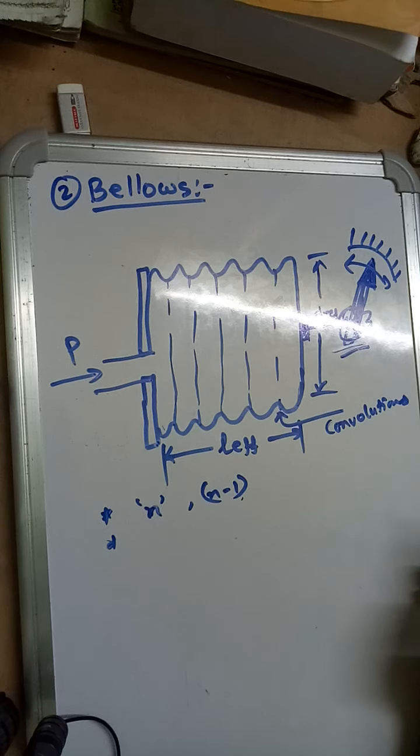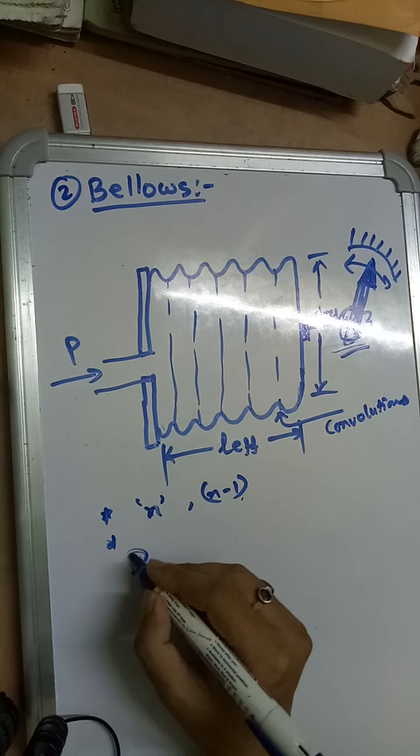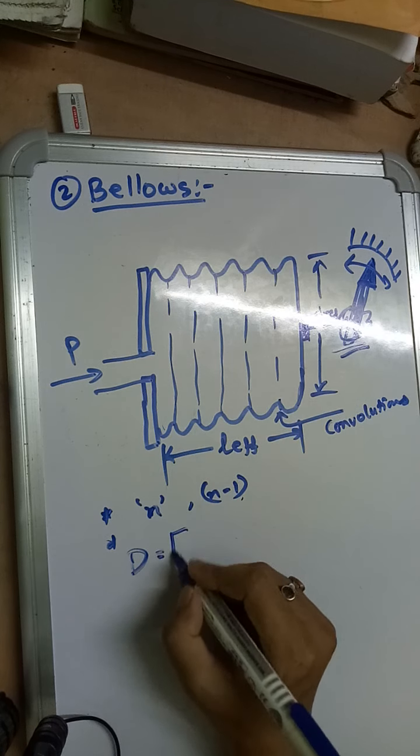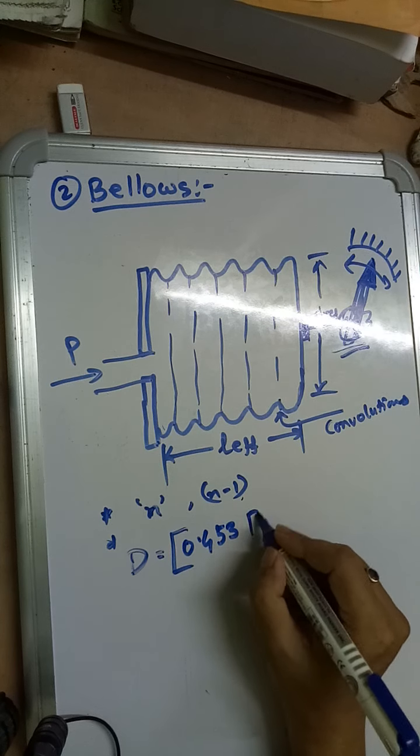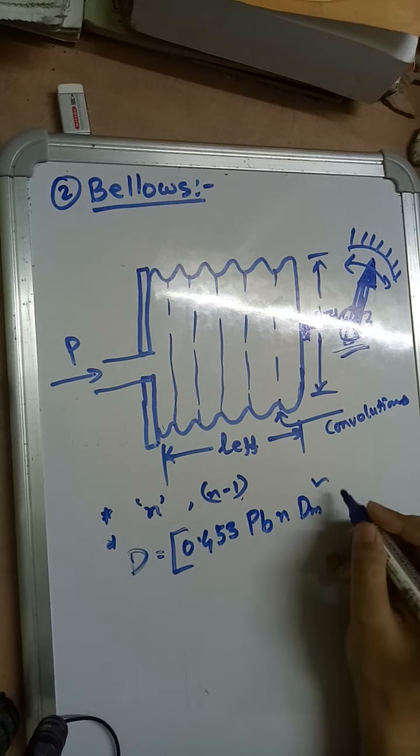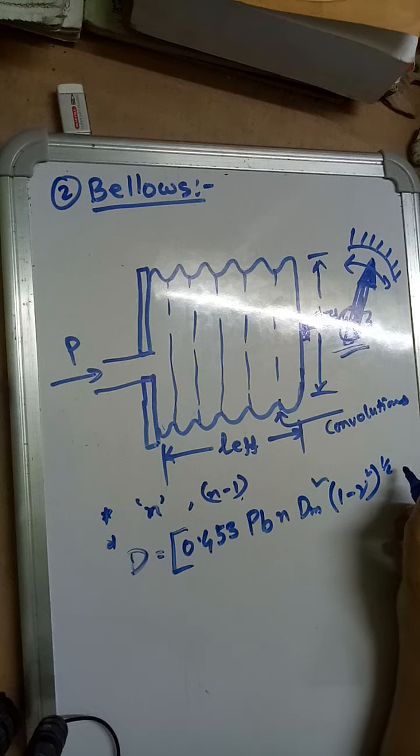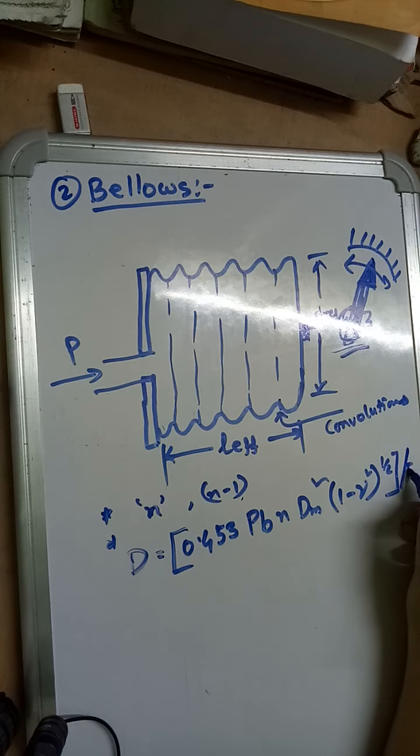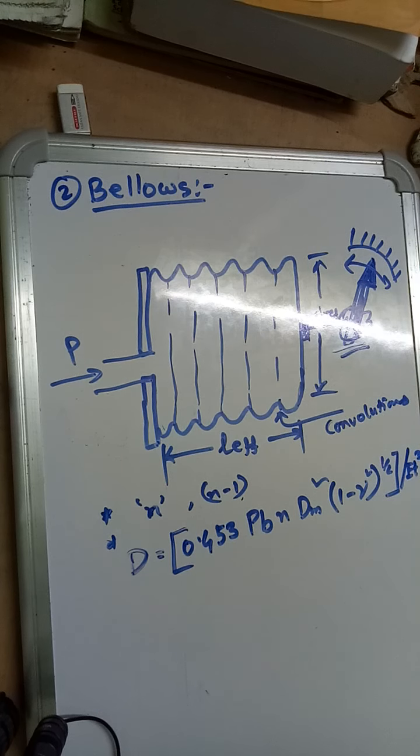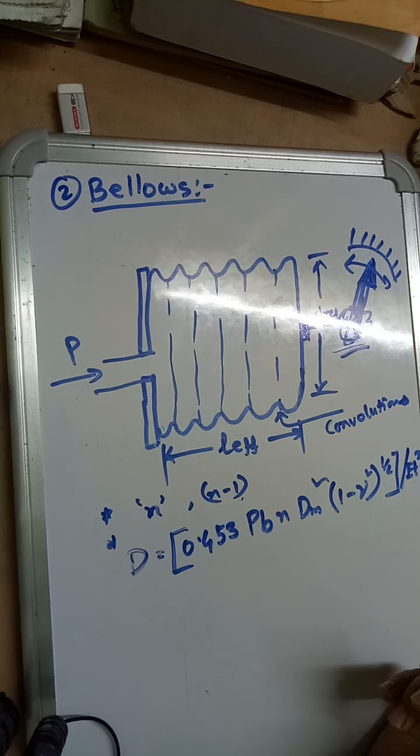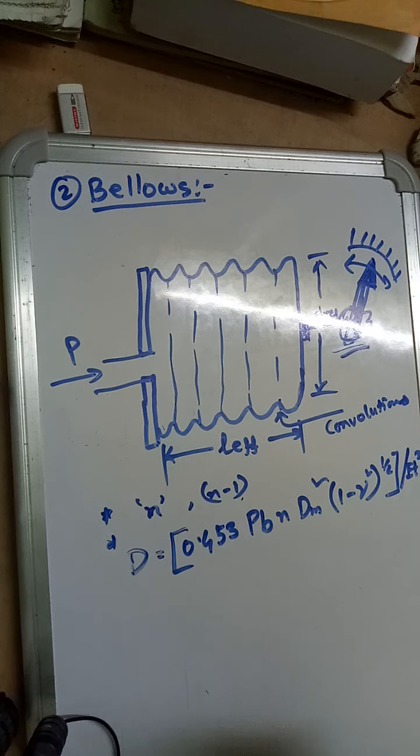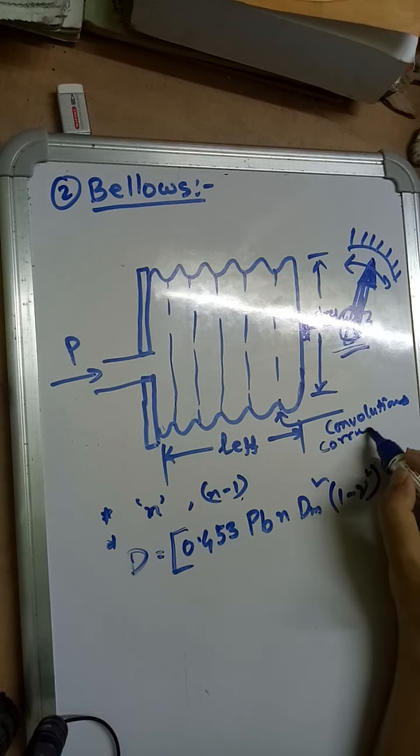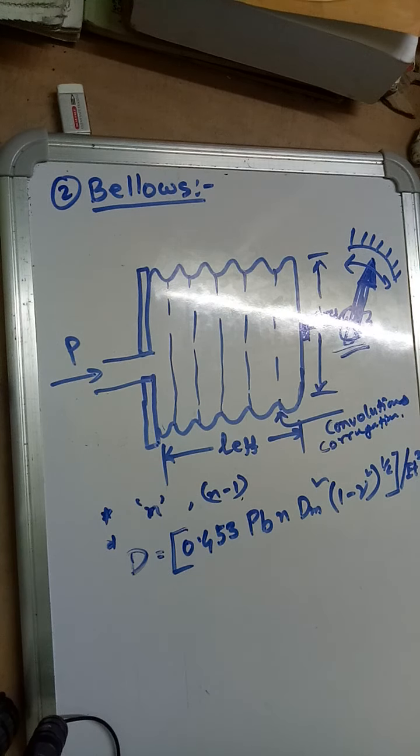The compound action of bending and tension operates the elastic member. In general, the displacement of the bellows element is given by - again, it is an empirical formula - d = 0.453 p b n d_m² √(1 - η²) / (E t³). Here, p equals pressure, b equals radius of each corrugation. A corrugation means it is called convolution or corrugation.